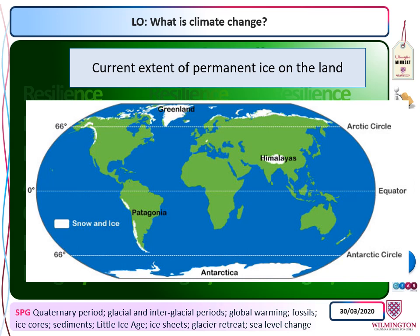This shows the current extended permanent ice on land. There are two main places: Antarctica in the south and the Greenland ice sheet in the north, plus some ice in mountain ranges like the Himalayas and the Andes. Almost all the ice — something like 70 to 80% — is locked up in Antarctica. Greenland is also important.